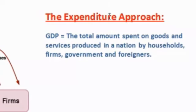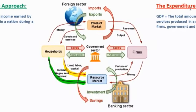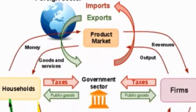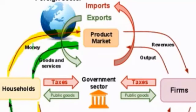Expenditure is another way of saying spending. Therefore, the expenditure approach measures the total amount spent on a nation's goods and services. Let's look at the circular flow model again and find out where the expenditure approach can be seen in this graph. Let's look in the product market now. Households spend money in the product market for which they receive goods and services. Of course, households are not the only ones consuming a nation's products. Firms also consume products in the form of capital goods, and governments consume products in the form of infrastructure goods, services such as healthcare, education, and national defense.